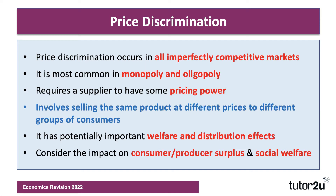Essentially, it involves selling the same product at different prices to different groups of consumers — you're segmenting the market. It's a strategy which often features on exam papers, in part because it has potentially significant welfare and distribution effects. So the really good answers will consider the impact of price discrimination — the arguments for and against — through the changes in consumer and producer surplus, or changes in social or community welfare.